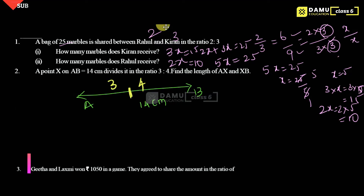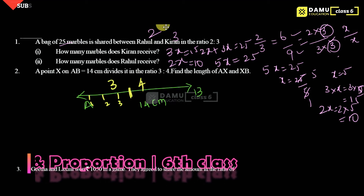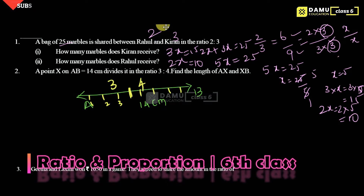If you divide the line, one side has 1, 2, 3 parts and the other side has 4, 5, 6, 7 parts. So one portion occupies 3 parts and the other occupies 4 parts. X is the dividing point. It divides AB in the ratio 3 is to 4. We have to find AX and XB.